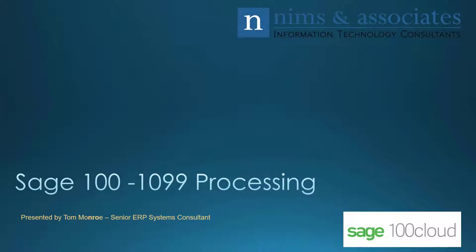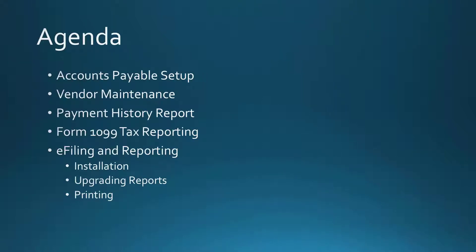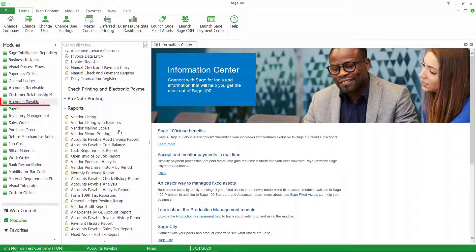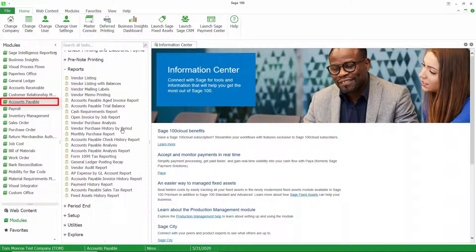Thank you very much for joining us today. Today we're going to talk about using 1099 processing in Sage 100. Let's take a look at our agenda: we're going to first look at accounts payable setup, a little bit of vendor maintenance, take a look at the payment history report, and then get into the form 1099 tax reporting and using the e-filing and reporting application in Sage 100.